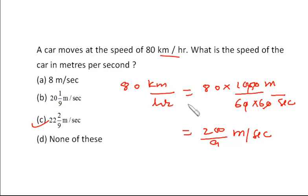5 by 18 is nothing but this 1000 by 60 into 60, that is 1000 by 3600. If it is simplified, it will give 5 by 18.